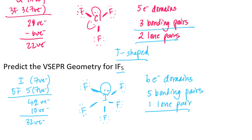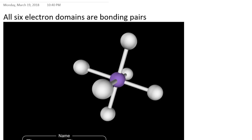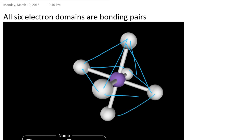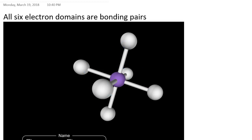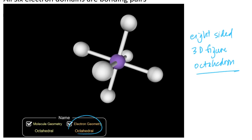Let's take a look at what the geometries for six electron domain central atoms look like. If I have a figure representing six electron domains and connect everything, it looks like two four-sided pyramids stacked sharing a floor — similar to trigonal bipyramidal geometry but with an extra side. This gives me an eight-sided three-dimensional figure called an octahedron. So we call this electron domain geometry octahedral. If there are no lone pairs on the central atom, then the molecular geometry is also octahedral.